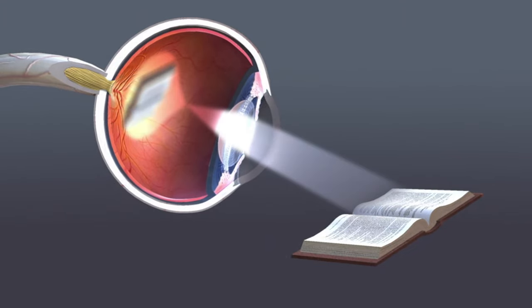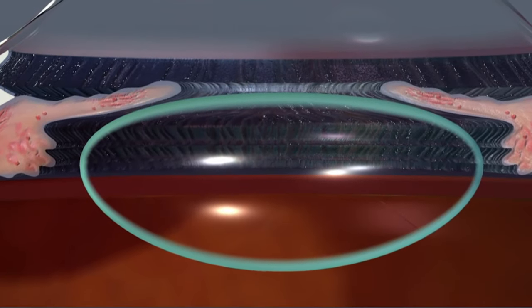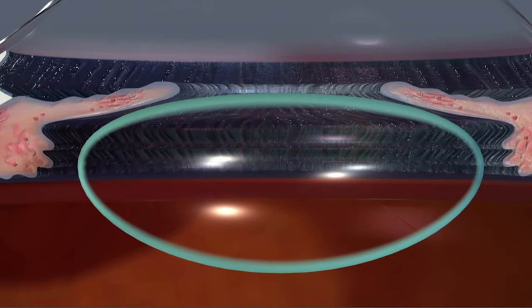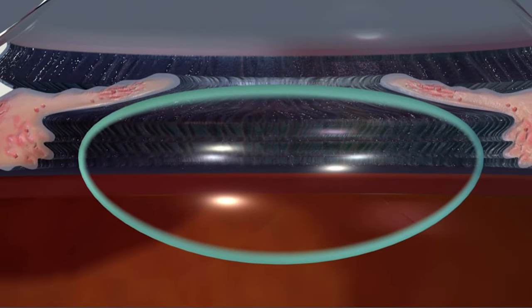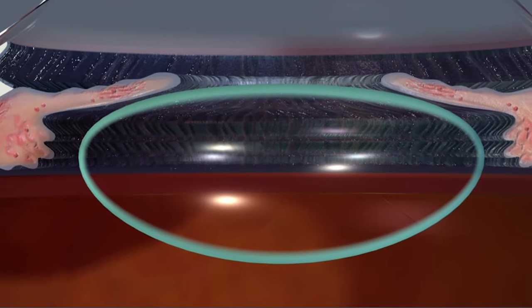The lens must be clear for the retina to receive a sharp image. The lens is made of mostly water and protein. The protein is arranged in a precise way that allows light to pass through it without distortion.